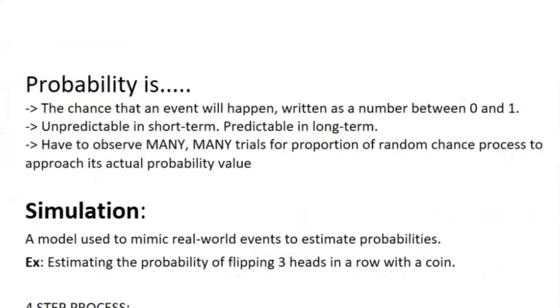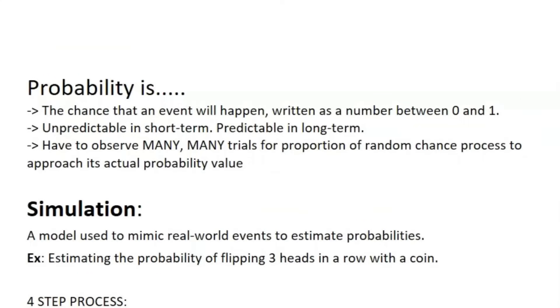So what is probability? It's the chance that something happens, and it's written as 0 to 1. So if it's 0, it's impossible. 1 means 100% chance of happening. It's unpredictable in the short term, unpredictable in the long term, because you have to observe many, many trials with the same proportion of the random chance process before it actually starts to approach its actual probability value.